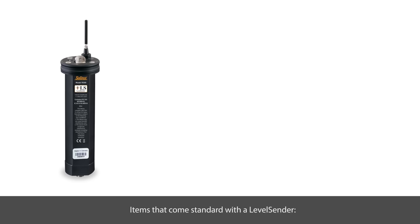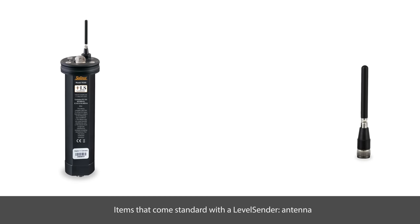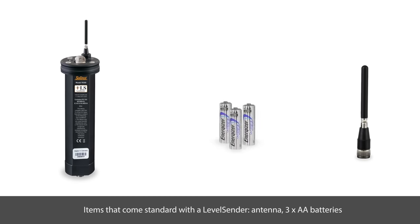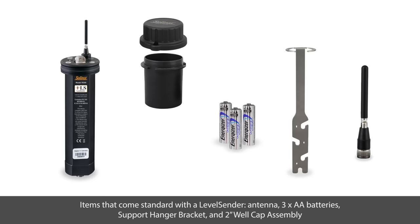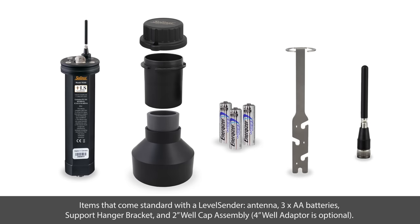Let's go over the items that come standard with a Level Sender: an antenna, 3 AA batteries, a support hanger bracket, a 2 inch well cap assembly. A 4 inch well cap adapter is optional.